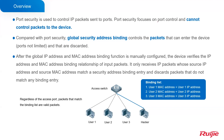On the switch, there are multiple entries. As you can see: User 1's MAC and User 1's IP, User 2's MAC and User 2's IP, User 3's MAC and IP. Only packets that match one of these entries will be received.